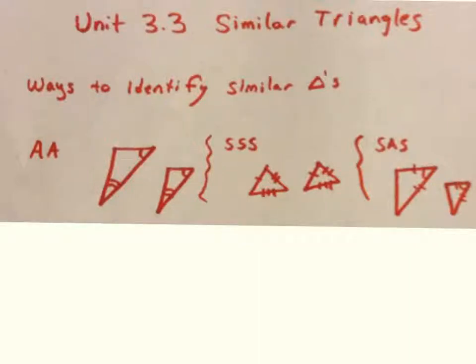Hello, welcome everybody to your lesson on 3-3, Similar Triangles. Similar triangles are a little bit different than congruent triangles. Congruent, which is represented by this symbol - an equal sign with a little squiggly - means same size, same shape.